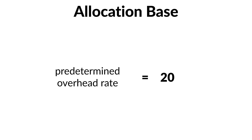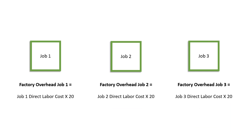The POHR is the rate that we multiply our allocation base with to get how much overhead we apply to certain jobs. Instead of not knowing where everything goes, we now have certain rates for every job, depending on how you as a manager choose to allocate and what allocation basis you choose to use. Using the same predetermined overhead rate for all jobs, it's easy to find how much factory overhead to assign per job, since the direct labor cost comes from the job order accounting system. Whatever is the direct labor cost of a job, we just multiply it by 20 to get its factory overhead.